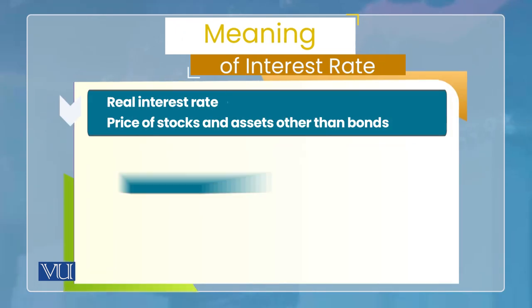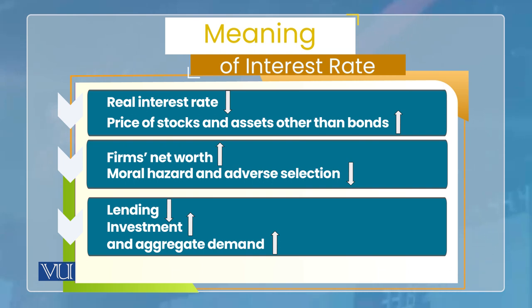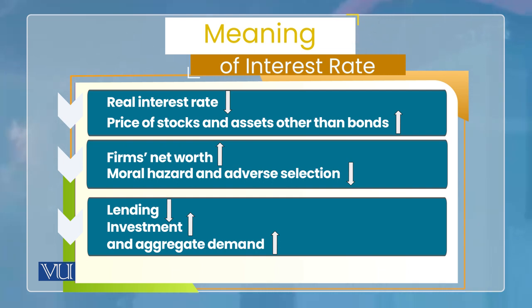Ab is case mein, hum balance sheet channel discuss karen to monetary policy ka kya role ho sakta hai. Monetary policy change karti hai interest rate — although nominal interest rate change karti hai, expectations given hon to real interest rate change ho jayega. Agar real interest rate kam ho jata hai — monetary policy expansionary ho gai — toh prices of stocks ya other assets increase ho jate hain. Iska matlab hai price of equity, price of stock increase ho jayega jab real interest rate kam hoga. Aur chunke firms ki balance sheet mein jo assets hote hain unm stocks/equity hoti hai, iska matlab hai firms ki net worth increase ho jaye.